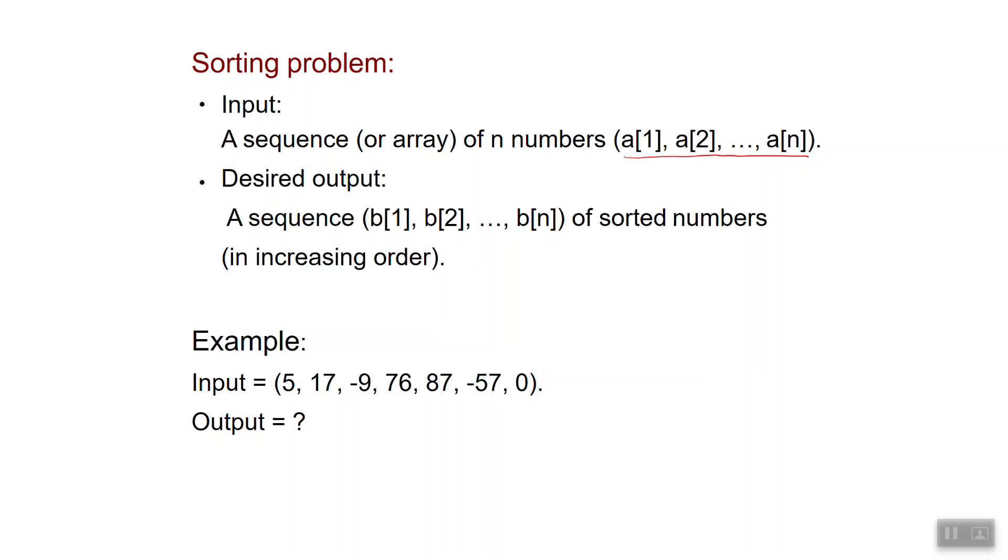For example, if my input is this sequence on the slide: 5, 17, minus 9 and so on, the output would be the sequence minus 57, minus 9, 0, 5 and so on.